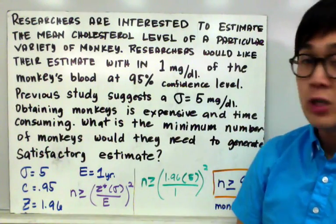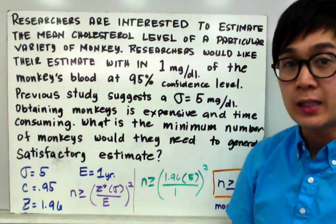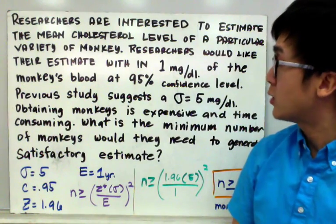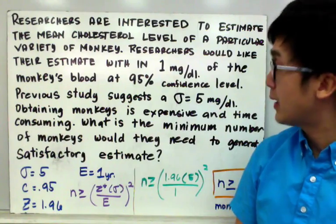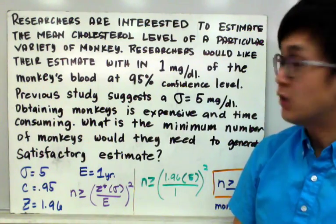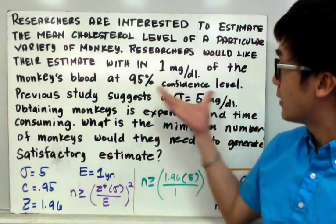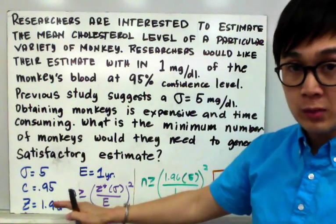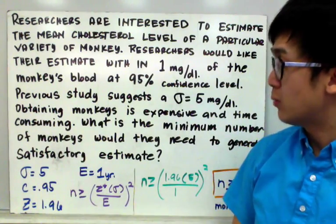To determine the number of monkeys we need as a researcher to make sure that our population mean will be captured in our interval 95% of the time, we'll have to use our formula in that particular word problem.